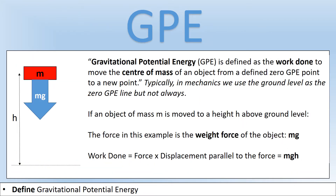The next kind of energy is GPE, or gravitational potential energy. This is defined as the work done to move the centre of mass of an object from a point we define as zero GPE. Typically at this level, ground level is zero GPE; we'll use a different zero when we study gravitational fields in year 13. For a mass moving from height h to ground level, the weight force is constant, so work done is force times displacement, which gives us GPE = mgh, where h is the vertical height above the zero GPE level.